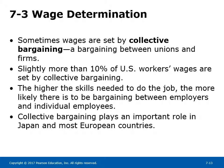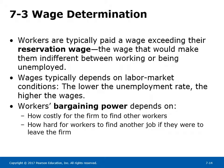Sometimes wages are set by collective bargaining — bargaining between unions and firms. Slightly more than 10% of U.S. workers' wages are set by collective bargaining. The higher the skills needed to do a job, the more likely there is to be bargaining between employers and individual employees. Collective bargaining plays an important role in Japan and most European countries.